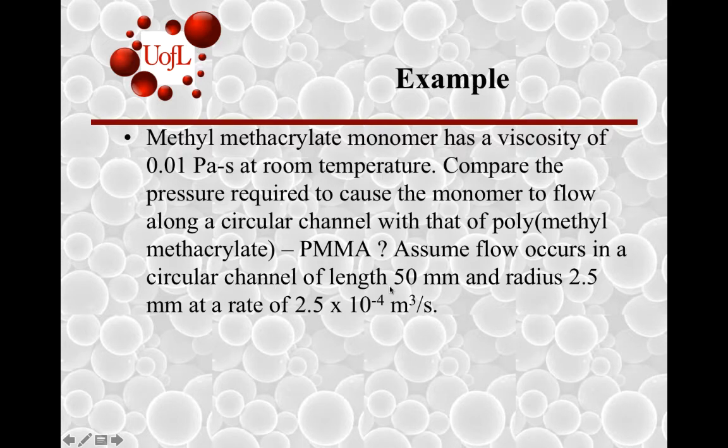You are given a circular channel of length L, so it's a cylinder, 50 mm L, R is 2.5 mm, and Q is given as 2.5 × 10⁻⁴ m³/s.